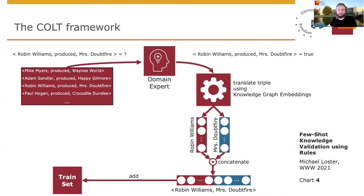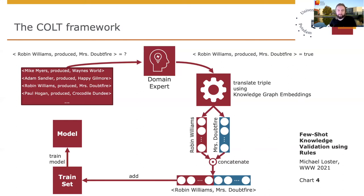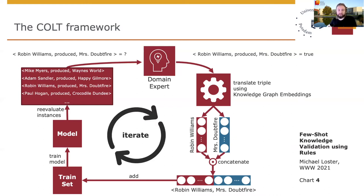This dataset consisting of subject-object combinations and their associated truth values is then used to train a model capable of assessing whether a given fact of a rule is correct or incorrect. Once the model is trained, it can be used to re-evaluate the confidence values of the remaining facts, which in turn can be used to select the next facts to be evaluated. This process continues until either all facts have been evaluated or a designated budget is depleted.